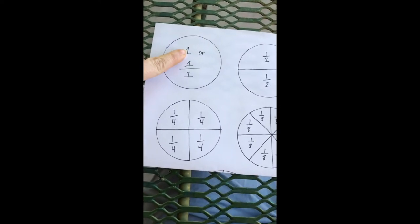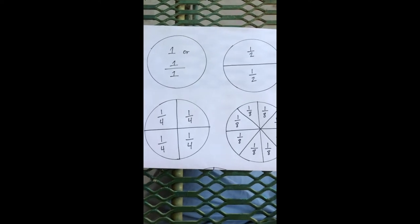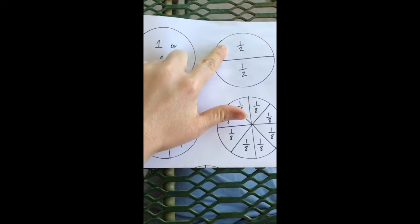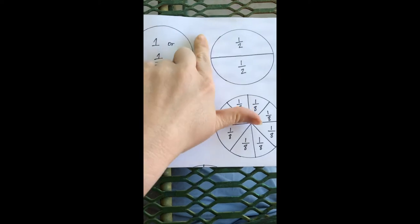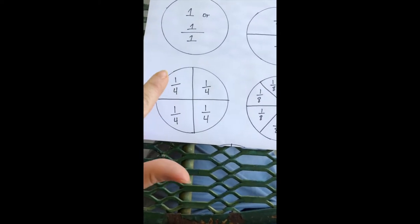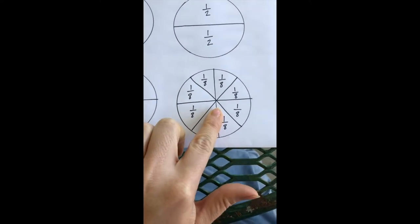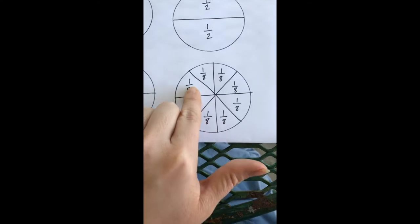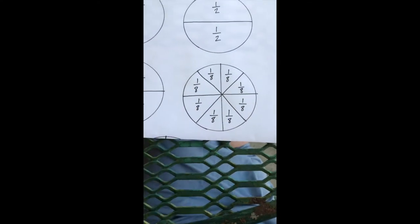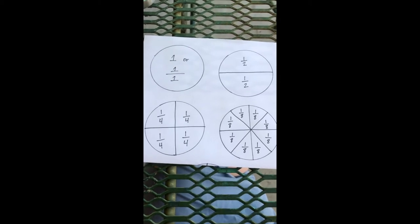One of the types of circles you can do is just a whole circle, which would be one or one over one if you're talking about a whole, or a half—because two halves equal a whole. Or we could have some fourths, so we have four pieces here which are each one-fourth. Or you can divide your circle into eighths, so each piece here is one-eighth. Those are going to be the fractions we'll be working with to create our collage.